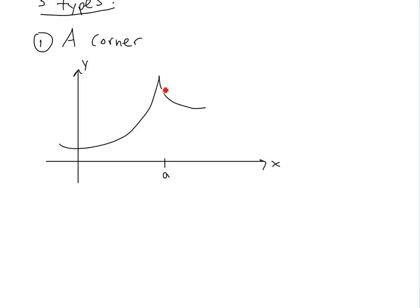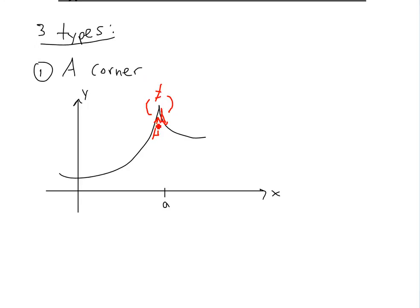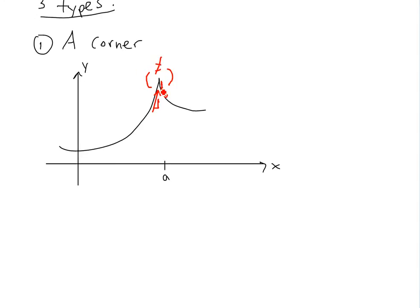This is not differentiable because if you were to look at this function, the derivative from the left side is going to be a steep upward slope, but then as you see this corner, the slope from the right side is going to be a downward slope. These two are not the same, so this derivative is not equal to the other. Thus if they're not equal, it's not differentiable — the limit does not exist, because the derivative can't have two different values.